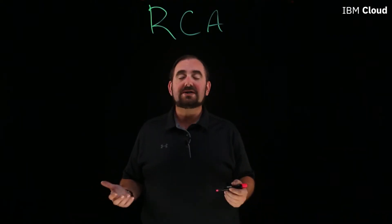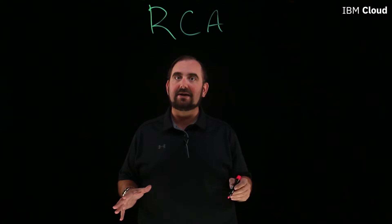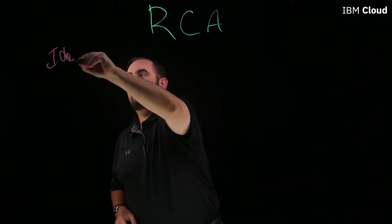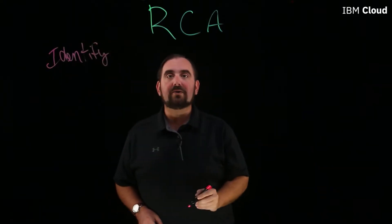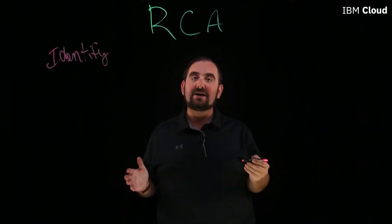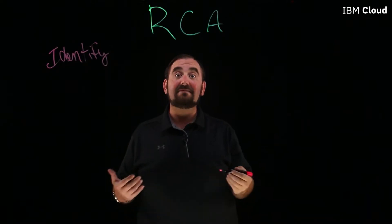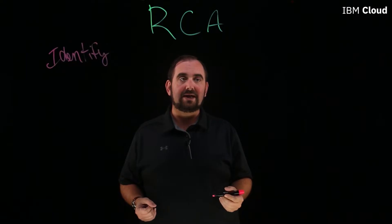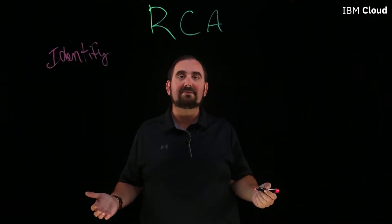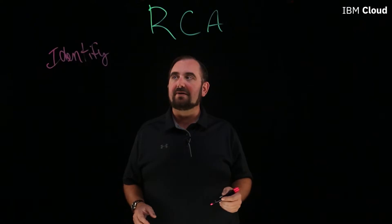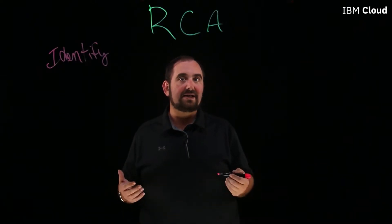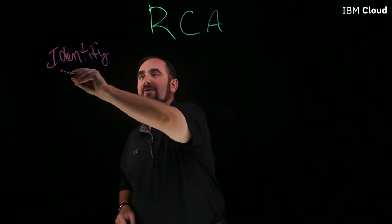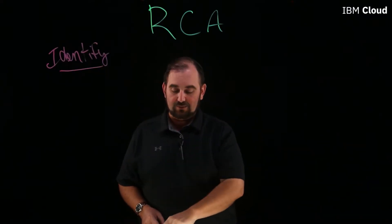The first step in an RCA — and I know this seems basic, but it is the first and most important step — is you must identify what went wrong. You have to identify your problem, and that means you have to define your problem. It's not just a matter of figuring out the symptoms. The symptom is 'my computing environment stopped being available' or 'the database dropped offline.' That's a symptom; that's not identifying what the problem is.